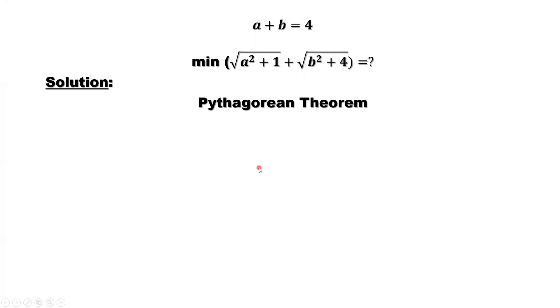We construct two triangles. Because a and b are positive, sum of a plus b equals 4. We assume from a to b, the distance is 4.